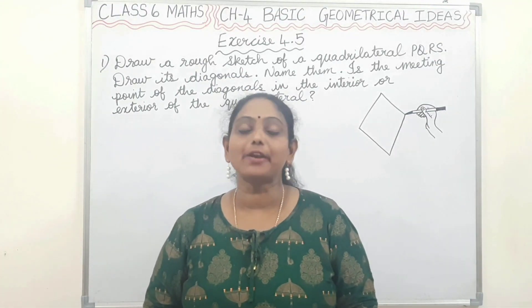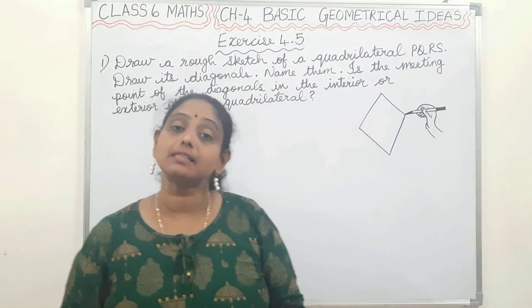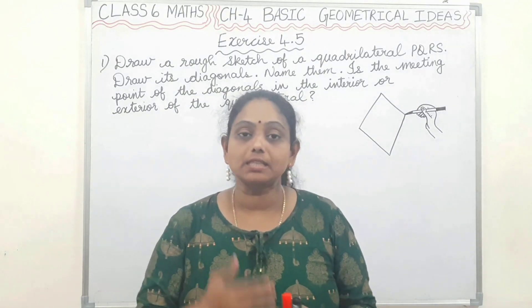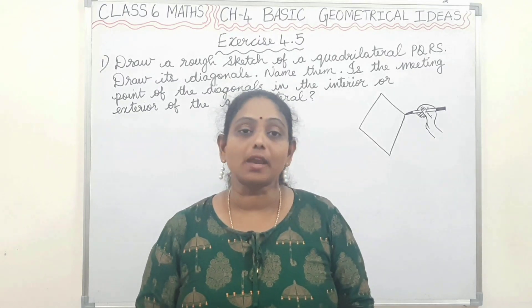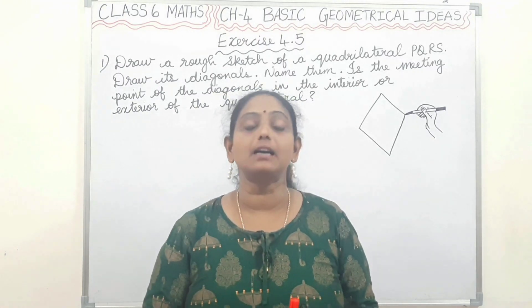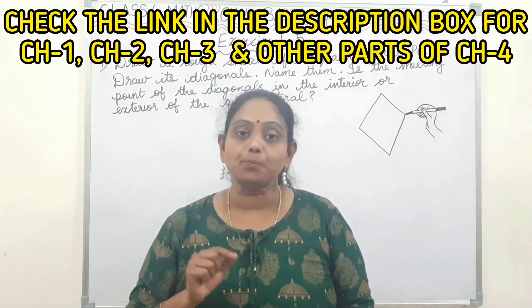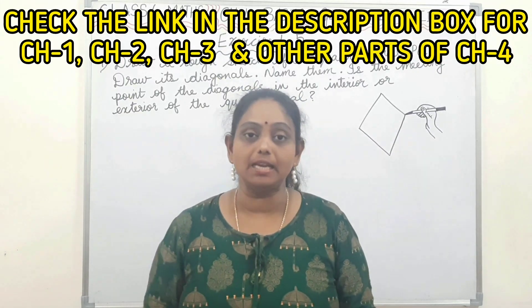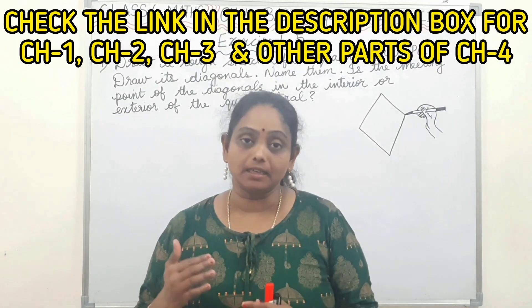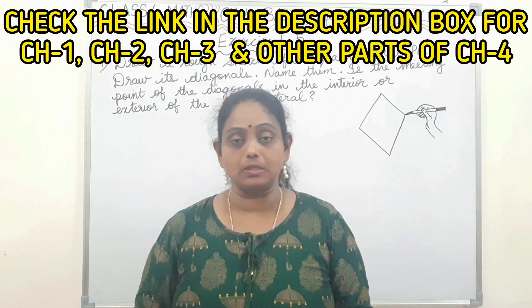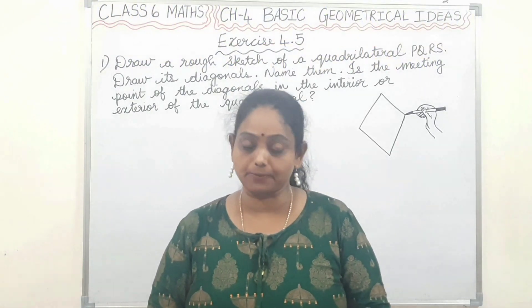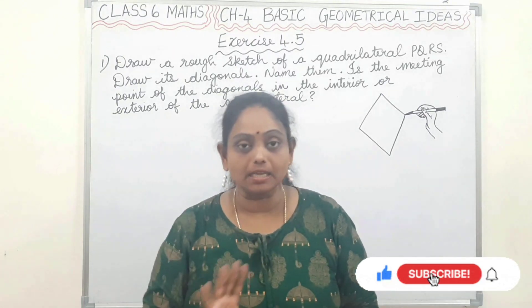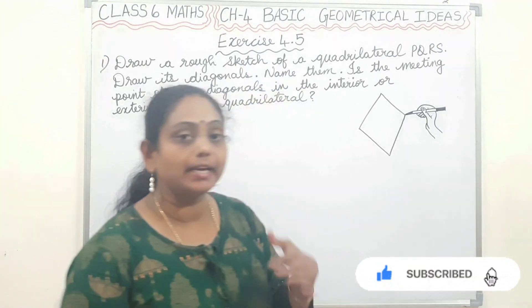Hello children, welcome to my maths class. Today we are going to continue with Chapter 4: Basic Geometrical Ideas. This is Class 6 NCERT maths and we are going to start Exercise 4.5. I hope you have revised the previous topics. We saw about quadrilaterals. If you haven't watched the previous video, I have given the link in the description box. Chapter 4 ke other parts ki bhi link di hai, please check it out. A quadrilateral is a four-sided polygon — it has four angles and four sides.